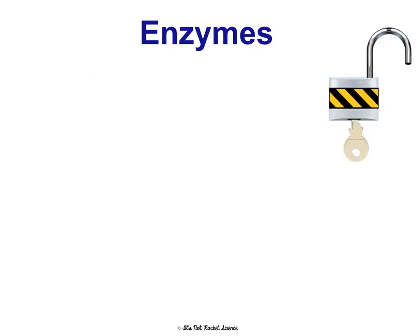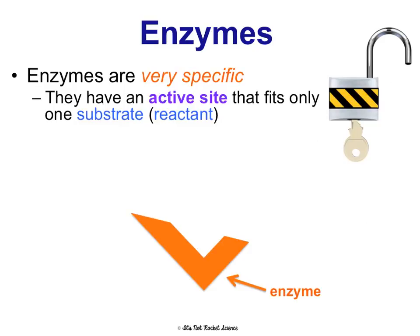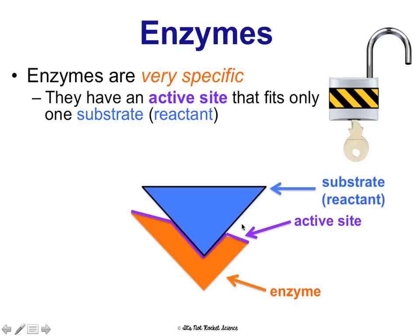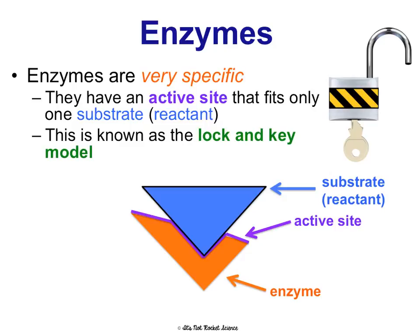Enzymes are often compared to a lock and key because they are very specific. They have an active site that only fits one substrate — the active site is like the grooves in the enzyme where the substrate bonds. Not all substrates can bond to the active site on a given enzyme, which is why they're very specific. This is why we refer to it as the lock and key model. If the active site gets messed up, the enzyme can't bond to the substrate and won't be able to do what it's supposed to do.